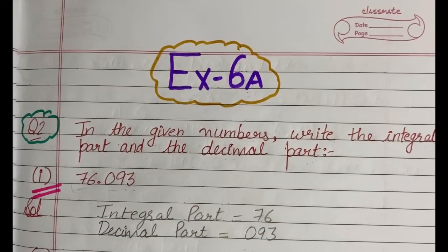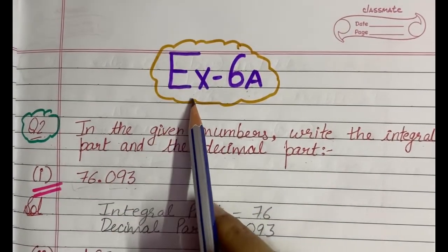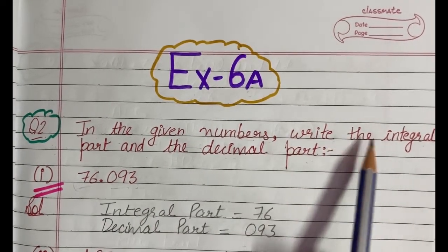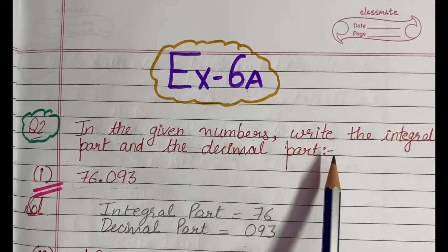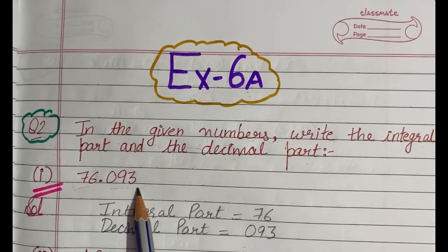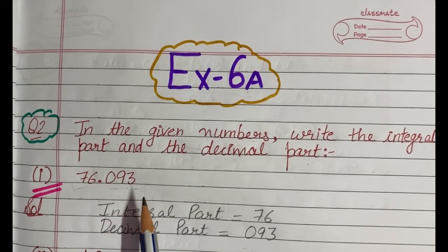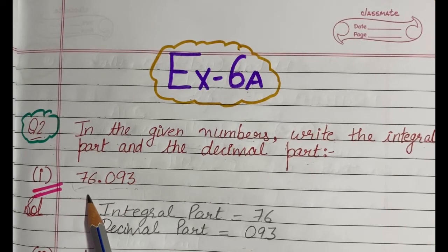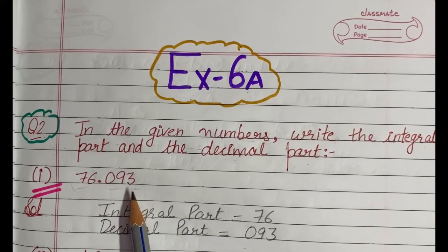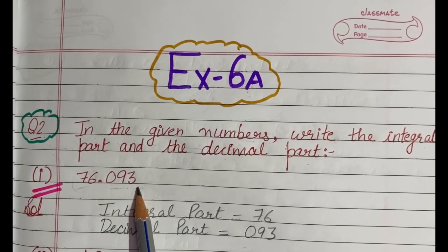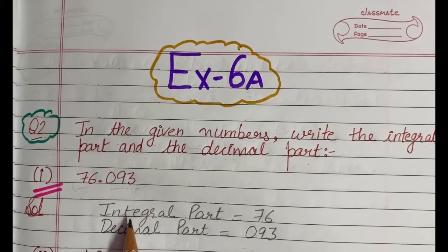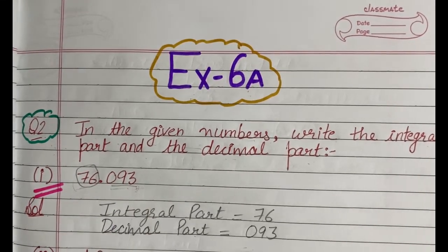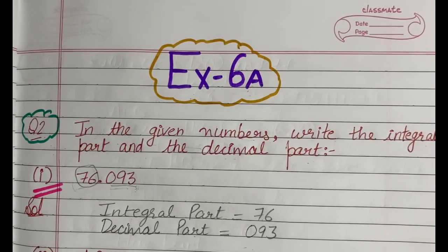I have taken question number 2 of exercise 6a and the question says that in the given numbers, write the integral part and the decimal part. The first part is 76.093. The part written to the left hand side of the decimal point is known as the integral part and the part written to the right hand side is known as the decimal part. So here the integral part will be 76 and the decimal part will be 0.93. Hopefully the first part is clear to you.